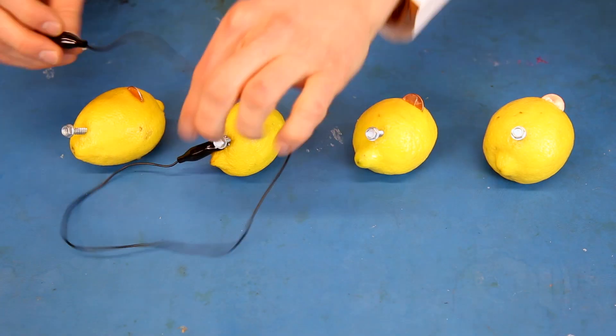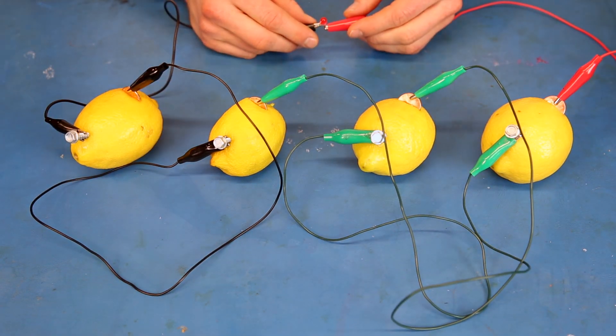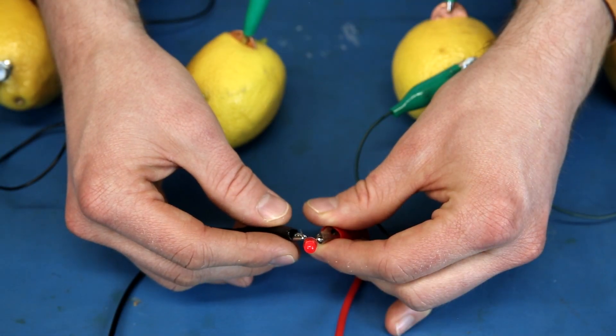If we connect four lemons in series, we can raise the potential high enough to light an LED. It might be a bit dim, so you probably want to look at it in a dark room.